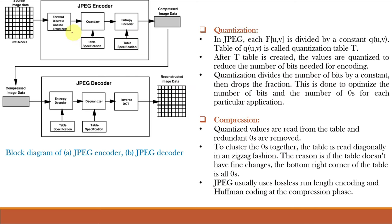This figure shows the block diagram of JPEG encoder and decoder. First, the image is divided into 8 cross 8 sub images to speed up the calculations. Next forward DCT is applied to this block to obtain F of UV.